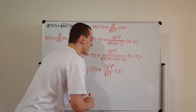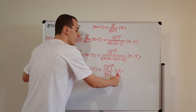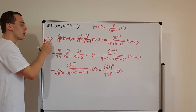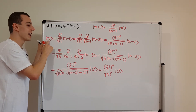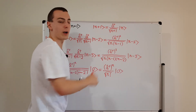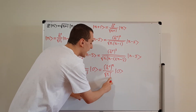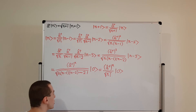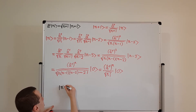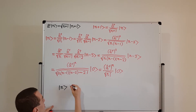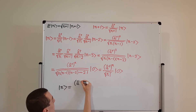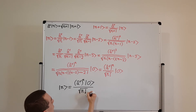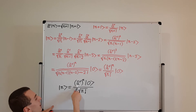So the general relationship is: any energy eigenstate labeled by n, where n is a non-negative integer, can be expressed as the raising operator a dagger applied n times to the ground state, all divided by the square root of n factorial. The square root of n factorial is the normalization factor. This tells us that to reach eigenstate n from the ground state, we apply the raising operator exactly n times, and divide by the square root of n factorial to preserve normalization.